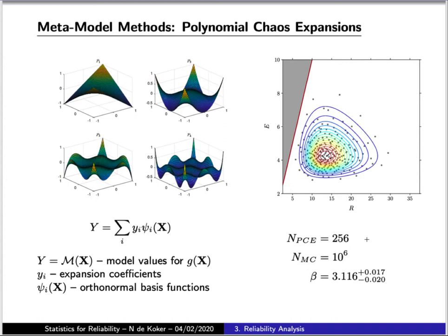For example, analyzing the same reliability problem using 256 very strategically chosen points and then computing the performance function for those points and using those values to parametrize our polynomial chaos expansion, we can then perform a Monte Carlo determination using a million points where for each point we compute the value of our meta-model and use that to determine for which of these failure occurs and for which not. Following that approach, we get a reliability result which compares very favorably to our earlier crude Monte Carlo determination.